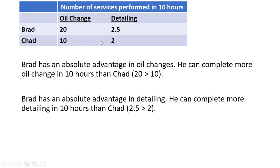We can use these numbers to also figure out who has an absolute advantage in which good. Brad has an absolute advantage in oil changes — he can complete more oil changes in 10 hours than Chad: 20 is greater than 10. Brad also has an absolute advantage in detailing — he can complete more detailing in 10 hours than Chad: 2.5 is greater than 2.